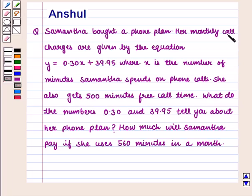Her monthly call charges are given by the equation y = 0.30x + 39.95, where x is the number of minutes Samantha spends on phone calls. She also gets 500 minutes free call time.